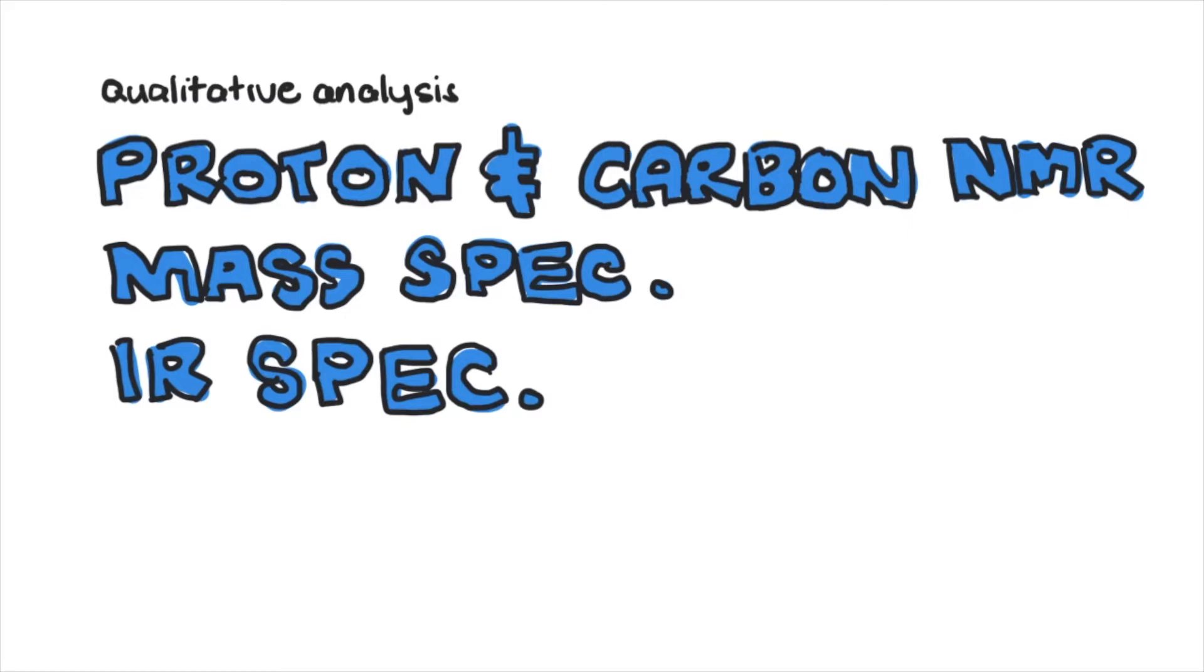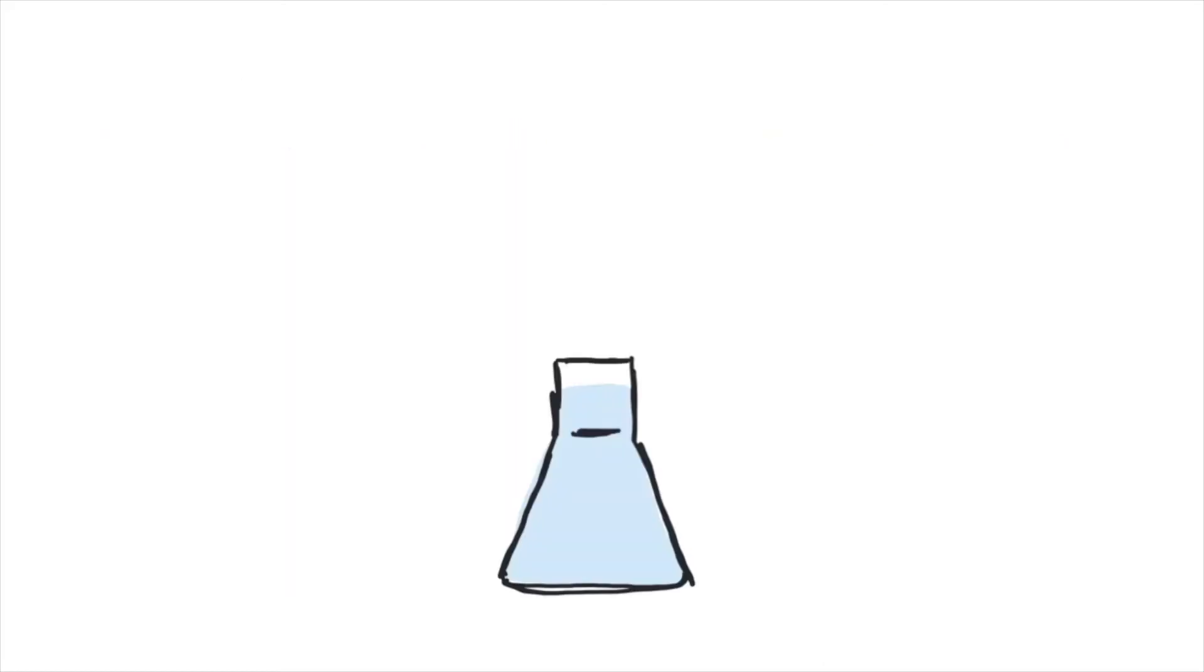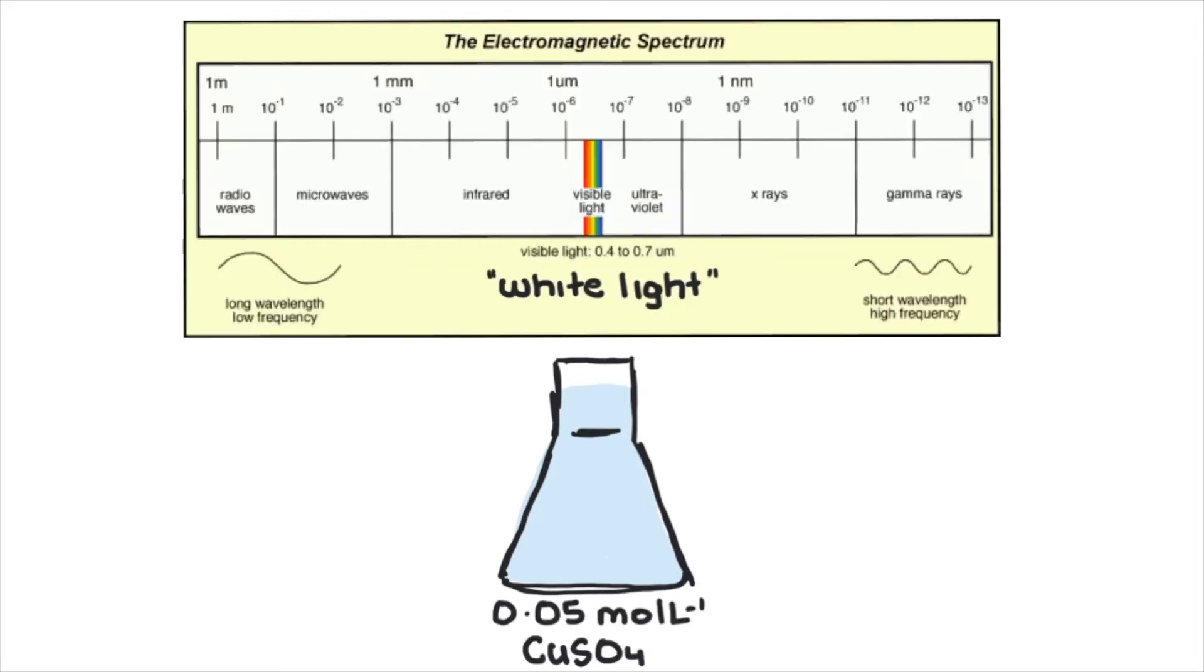Let's start with colorimetry. The idea behind colorimetry is that solutions are colored as they absorb different wavelengths that make up white light. For example, if you took a 0.05 molar solution of copper sulfate, you'd expect it to be blue because it absorbs all other wavelengths except those that give it the blue wavelengths of white light.